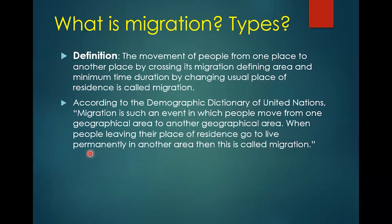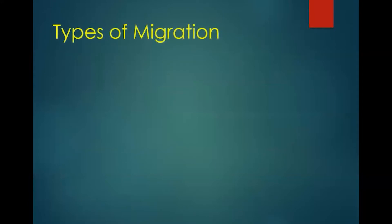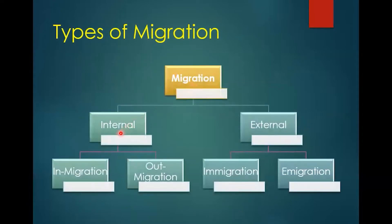Now let's go to the types of migration. We have two types: internal and external migration. Internal migration means that type of migration where people move from one place of a country to another place of the same country — they don't change the country. Within the boundary of the country, if they move, that is internal migration.